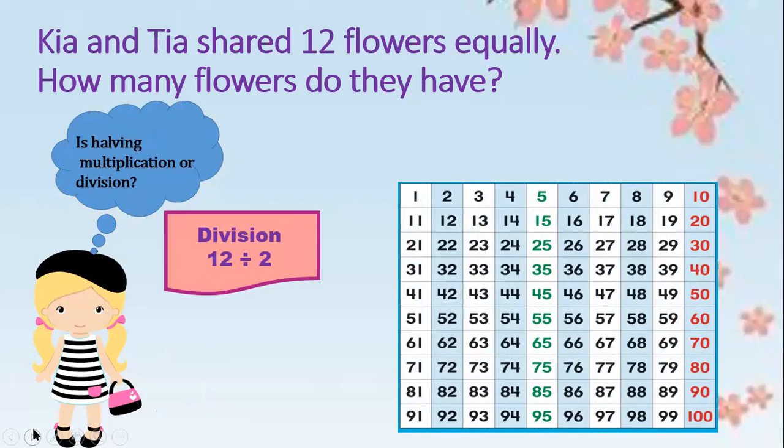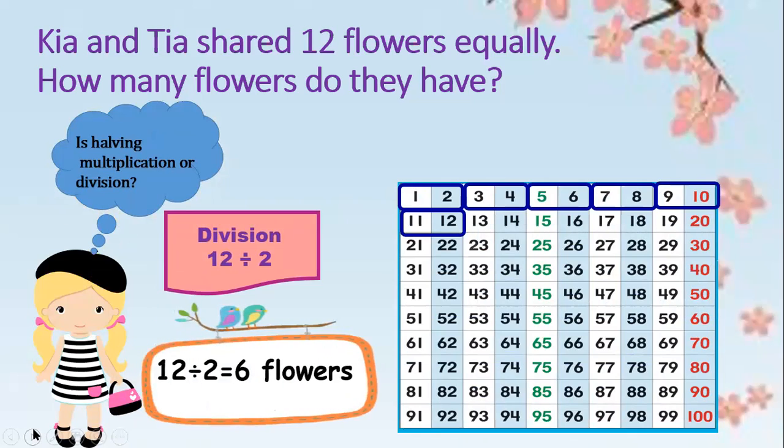So 12 divided by 2. How many 2's are there in total? Yes, there are 6 twos in total. So the answer is 6 flowers.